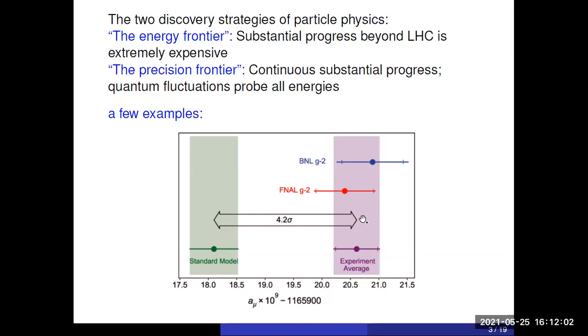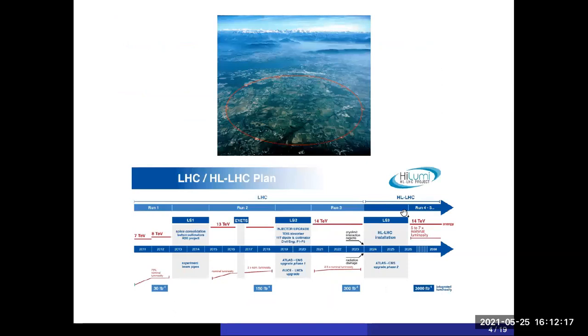In this case, for example, lattice QCD is very important because there is a process of normal QCD which could mimic this signal. And it is only possible with lattice QCD to really calculate that reliable to exclude this possibility. And that is a general trend that the big labs go in the direction of this precision frontier rather than the energy frontier simply for cost reasons.